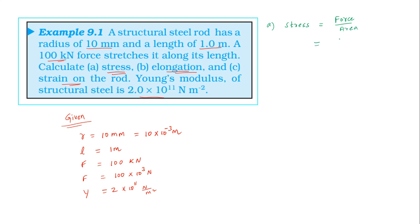For stress, we use the formula: stress = force divided by area. The rod has a circular cross-section, so area = πr². Substituting: stress = 100 × 10³ divided by π × r², where π = 3.14 and radius = 10 × 10⁻³ m.